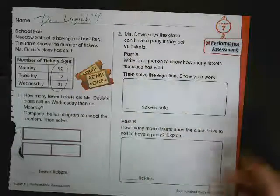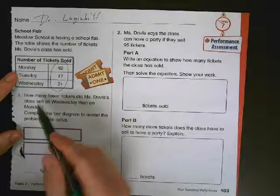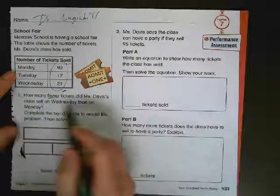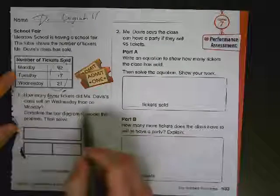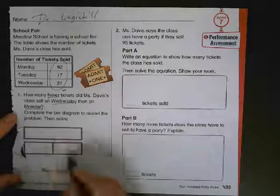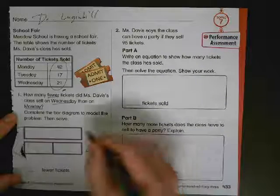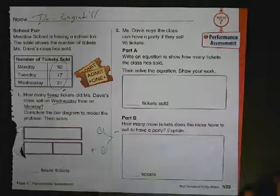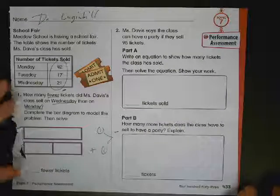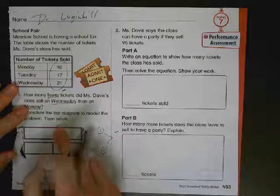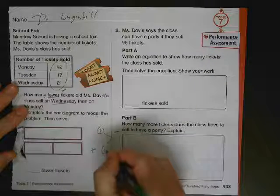You're going to use this information to answer some questions for one and two, part A and part B. Down here it says how many fewer? Fewer means subtraction. We know that. So to use this bar diagram, if you put both numbers down here, it's plus. If you put one on the top and one on the bottom, it's minus.